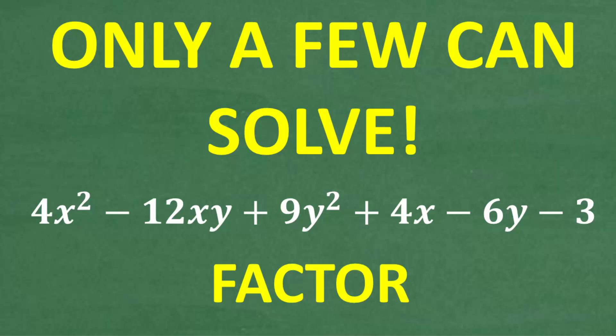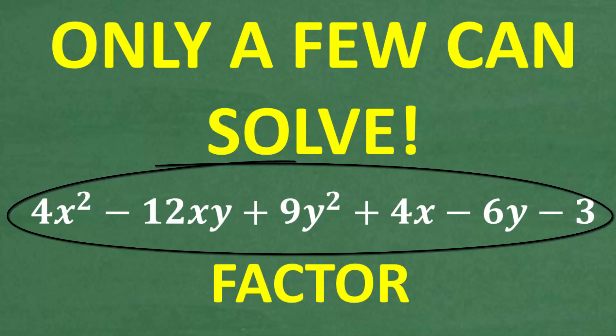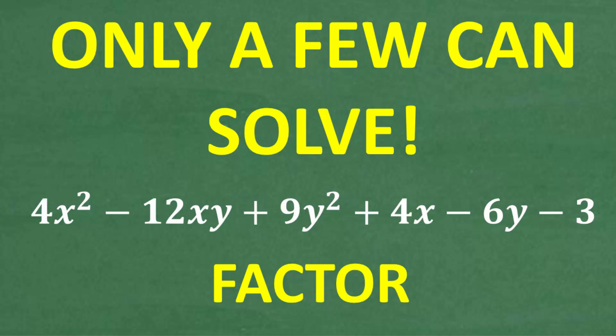Let's go ahead and take a look at the problem. We want to factor the following: 4x squared minus 12xy plus 9y squared plus 4x minus 6y minus 3. And I'm going to give you a hint. That hint is that this is factorable. In other words, this is not a prime situation where this can't be factored. This can be factored.